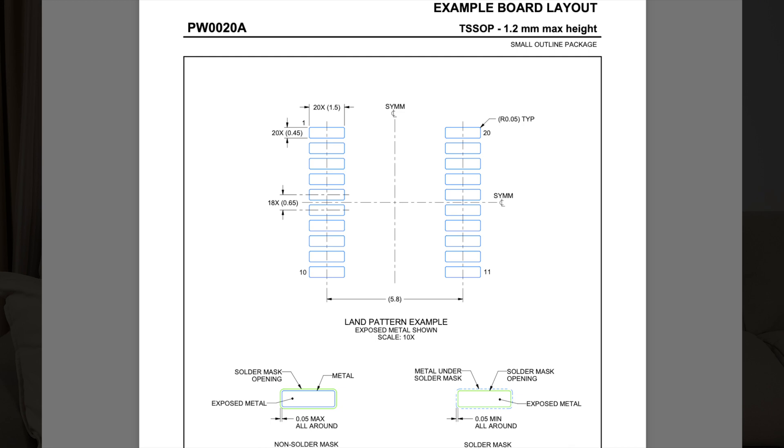Most manufacturers use standard packages, and you can find the footprint for these online most of the time. It's also important to note that manufacturers include footprint land patterns in their datasheets, which give you all the information you need to create correct footprints. Once you've got your parts sorted, you can move on to designing your schematic. At its core, the schematic is a list of interconnections called nets — the connections between your components — which allow you to supply your microcontroller with power or connect a button to your microcontroller, implementing the functionality you need out of your board.